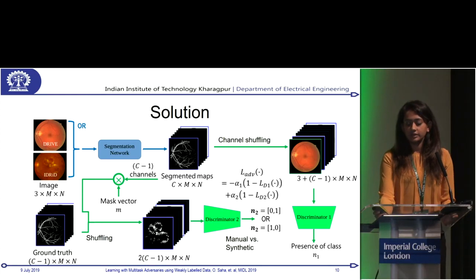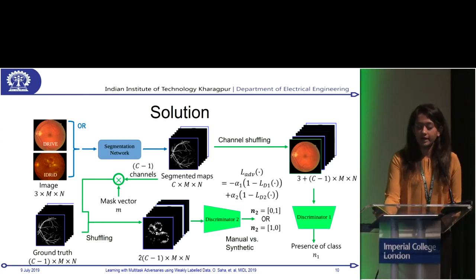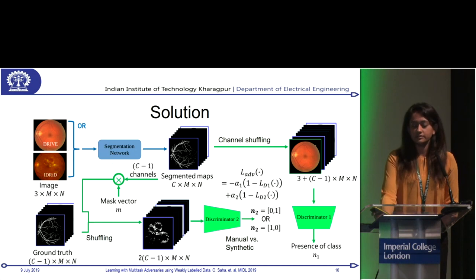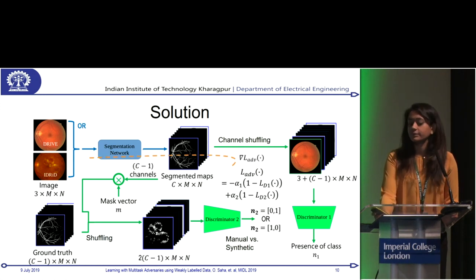We backpropagate both discriminator losses — adding them together and backpropagating through the segmentation network.